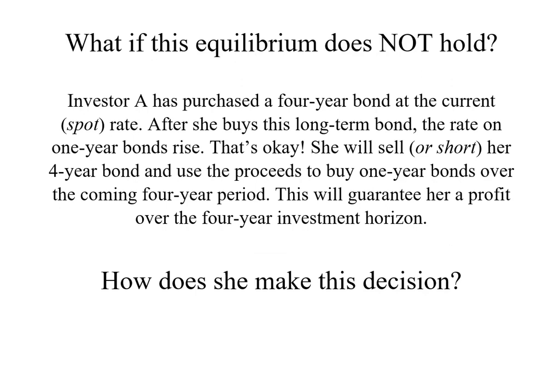So what happens if the equilibrium doesn't hold? Let's look at Investor A. Investor A purchased a four-year bond at the current spot rate. After she buys the long-term bond, the rate on one-year bonds rises, and what she will do is sell or short her four-year bond. She's then going to use the proceeds from that sale to buy one-year bonds over the coming four-year period — one one-year bond in each of the coming four years — which will guarantee her a profit over this four-year investment horizon.